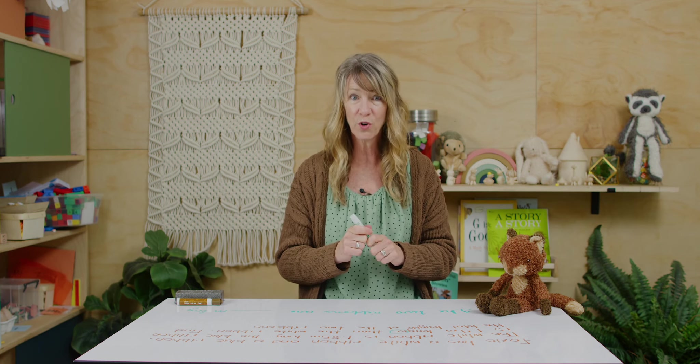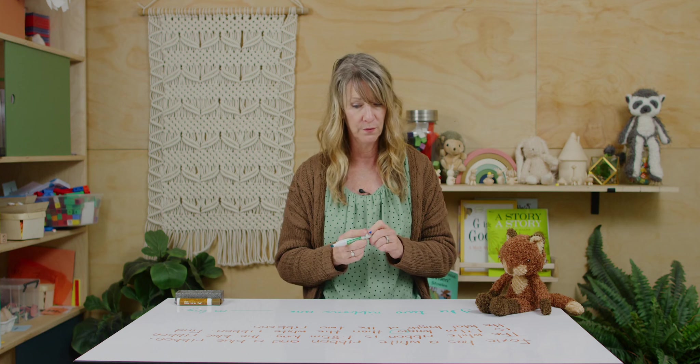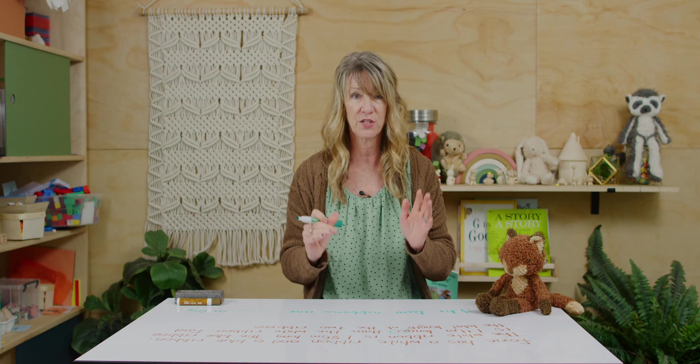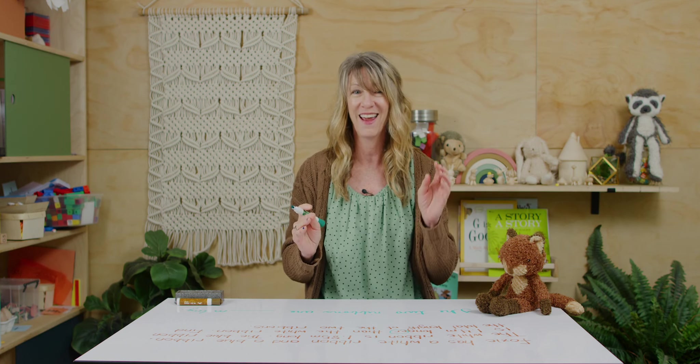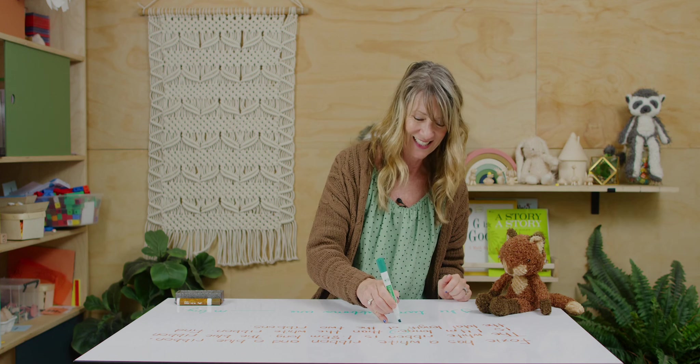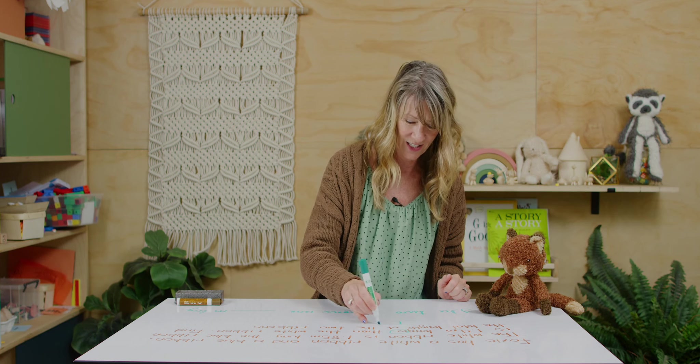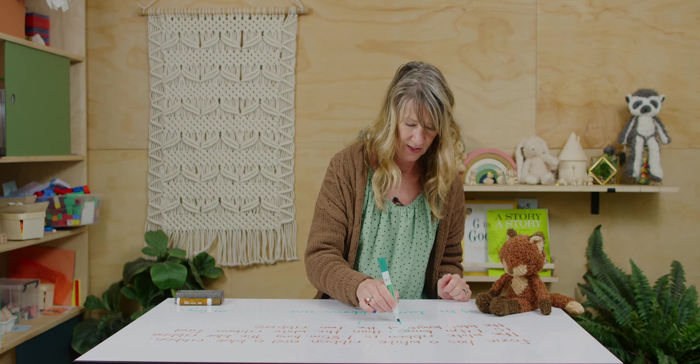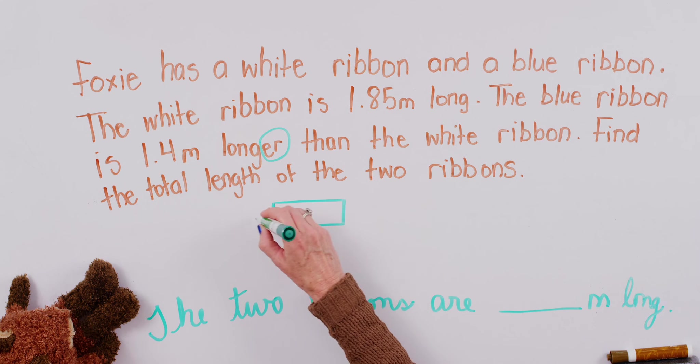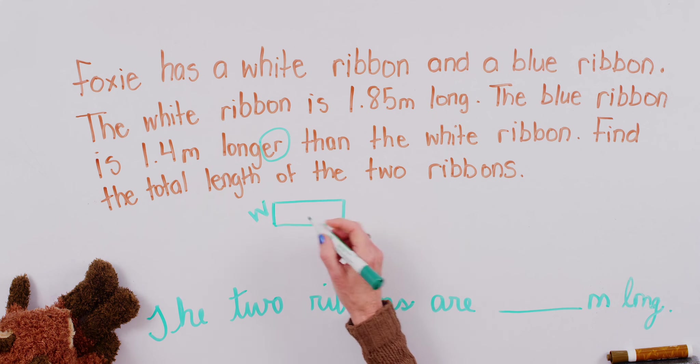You got it. We're going to compare. So, when we do comparison bars, we start out with bars that are equal size, equal shape, and equal value. So, we have the white ribbon.